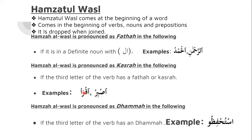Whether the third letter has a Kasra or a Dhammah-turned-Kasra, you will be placing a Kasra on Hamzatul Wasal in both of these cases. In Hamzatul Wasal you always look at the third letter, because in most cases the second letter will also be sukoon. So all the time you need to place a Kasra and not a Fathah.